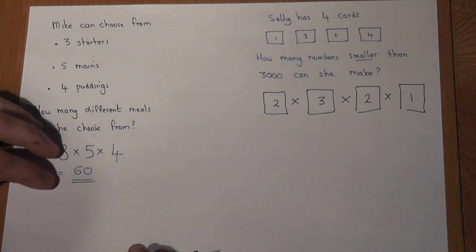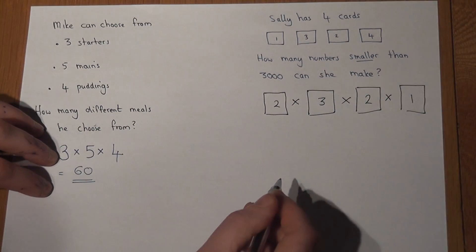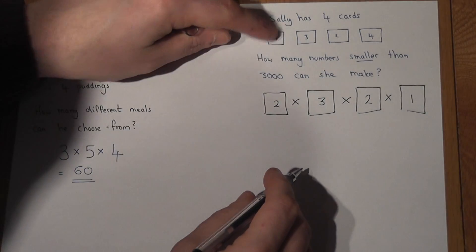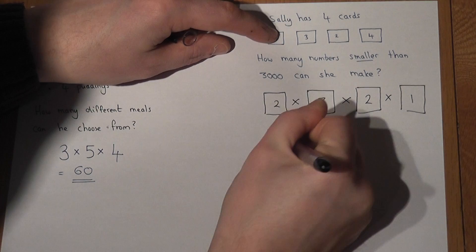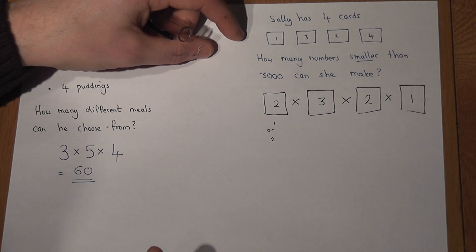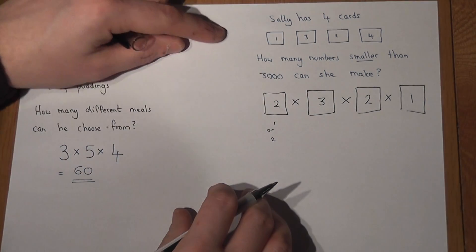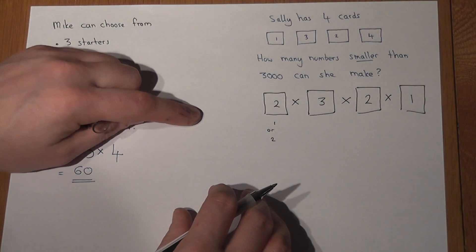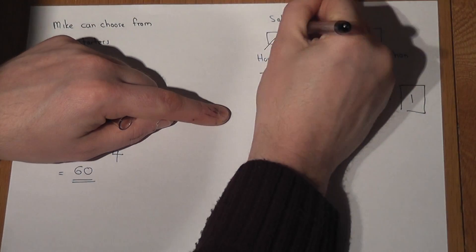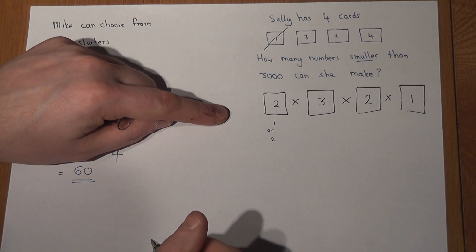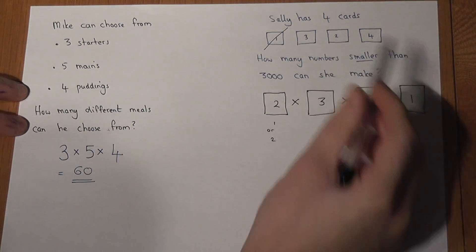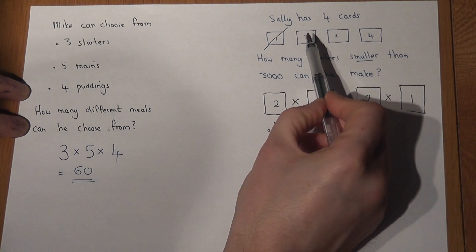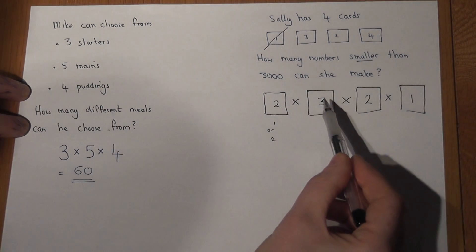So we will go through that again. To get a number which is smaller than 3000, she must begin with either a 1 or a 2. There are two options. Having picked one of those two cards, so it could be for example the 1, it does not matter which she then picks, but it's a choice of three of them, so there are three choices.